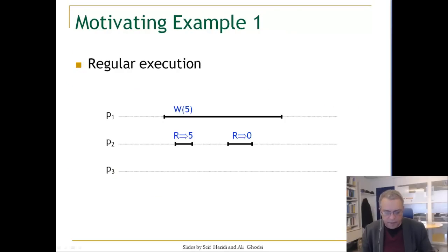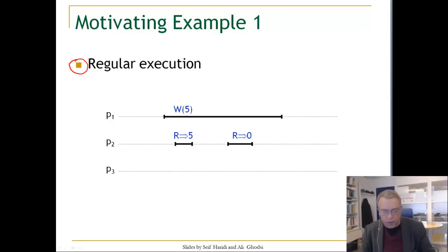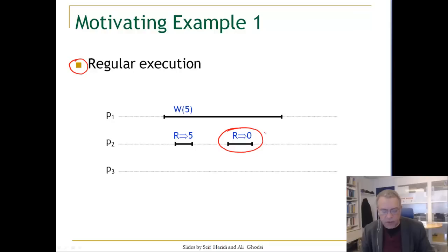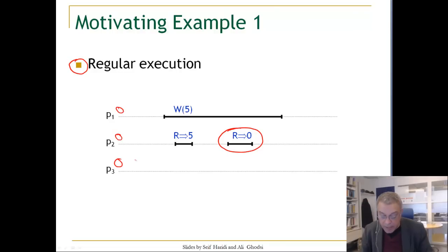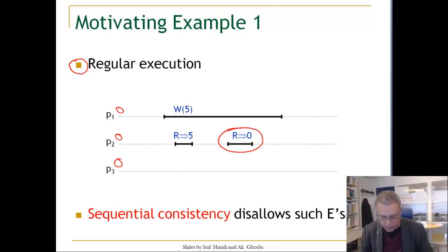Here we have a regular execution. We can observe that in a regular execution, reading the value of the register here, it is allowable to read the last value written, which is zero initially, or the overlapping write. That is completely legal from a regular execution point of view, but it is clearly not a single physical image of shared memory.